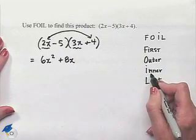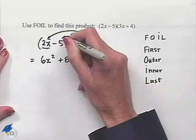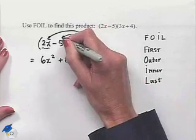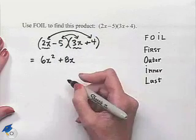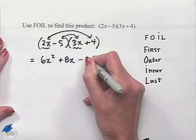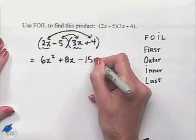The I tells us to multiply the terms that are in the inner portion of the product. That's going to be, picking up the sign in front of it, a negative 5 times 3x, which we'll write down as a subtraction of 15x.